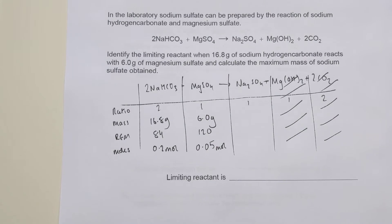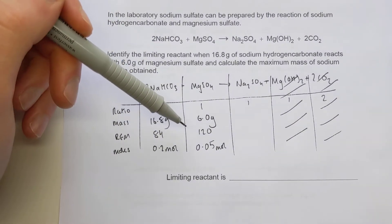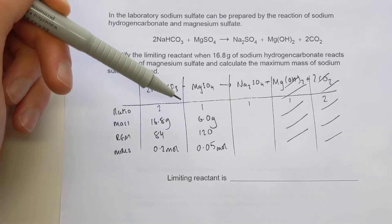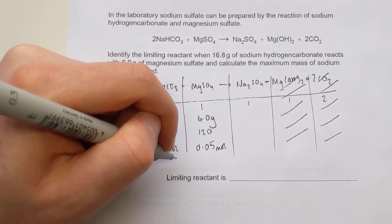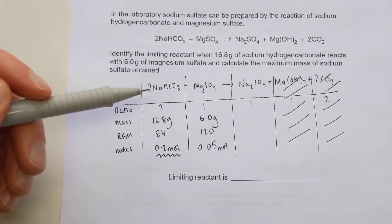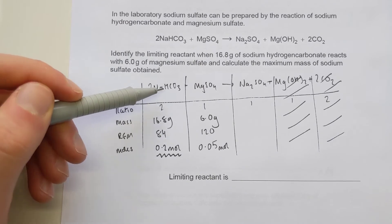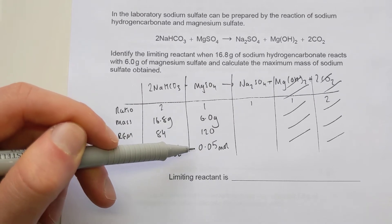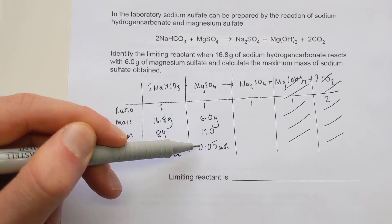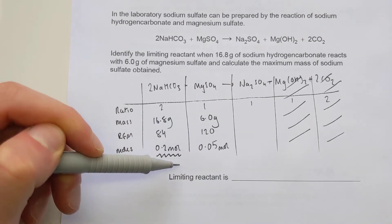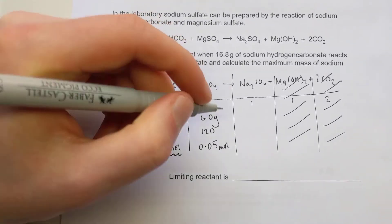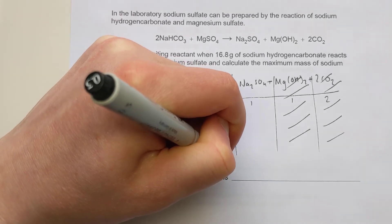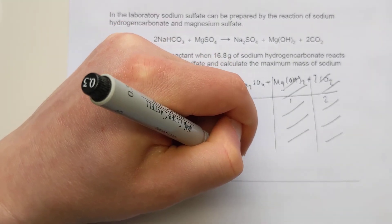Now the hard part of this trickier example: I need to be careful working out the limiting reactant because the two reactants don't react in a one-to-one ratio. The proper way is to pick one reactant and do a thought experiment. If 0.2 moles of sodium hydrogen carbonate fully reacted with magnesium sulfate, how much magnesium sulfate would I need? Using the 2-to-1 ratio, two of this reacts with one of this, so I would need half that amount - hypothetically, 0.1 moles of magnesium sulfate.